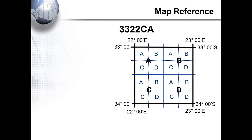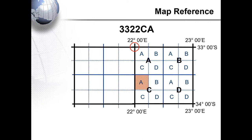The A refers to the smaller blocks A, B, C, D, which are 15 minutes by 15 minutes squares. It's important to also extend your lines should you be asked to determine the map title of a map west or northwest of the map that you are using.